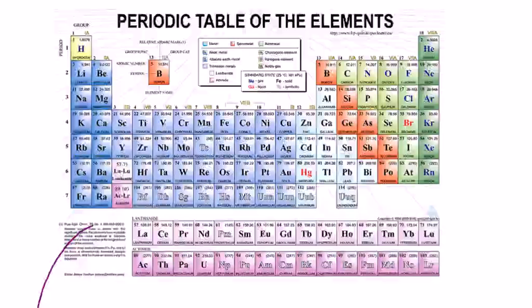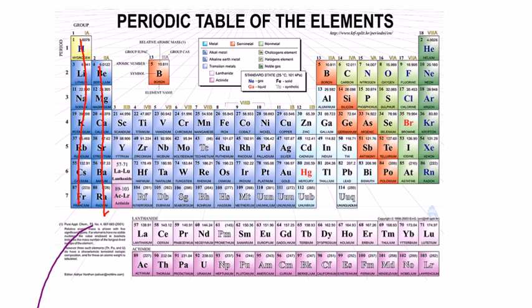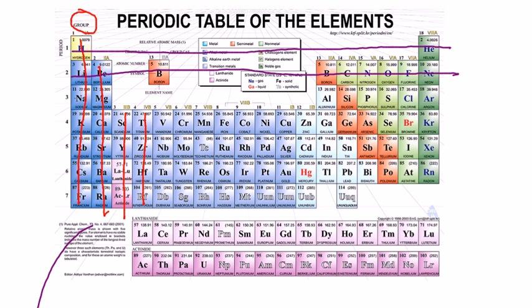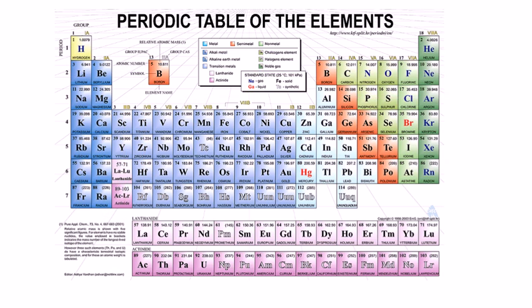So the periodic table of elements is broken into basically vertical and horizontal components. The vertical components here are called columns, and these vertical columns are known as groups. Then my rows, which are horizontal, are known as periods. That's actually where the periodic table of elements comes from. So I have my vertical columns known as groups and my horizontal rows known as periods.